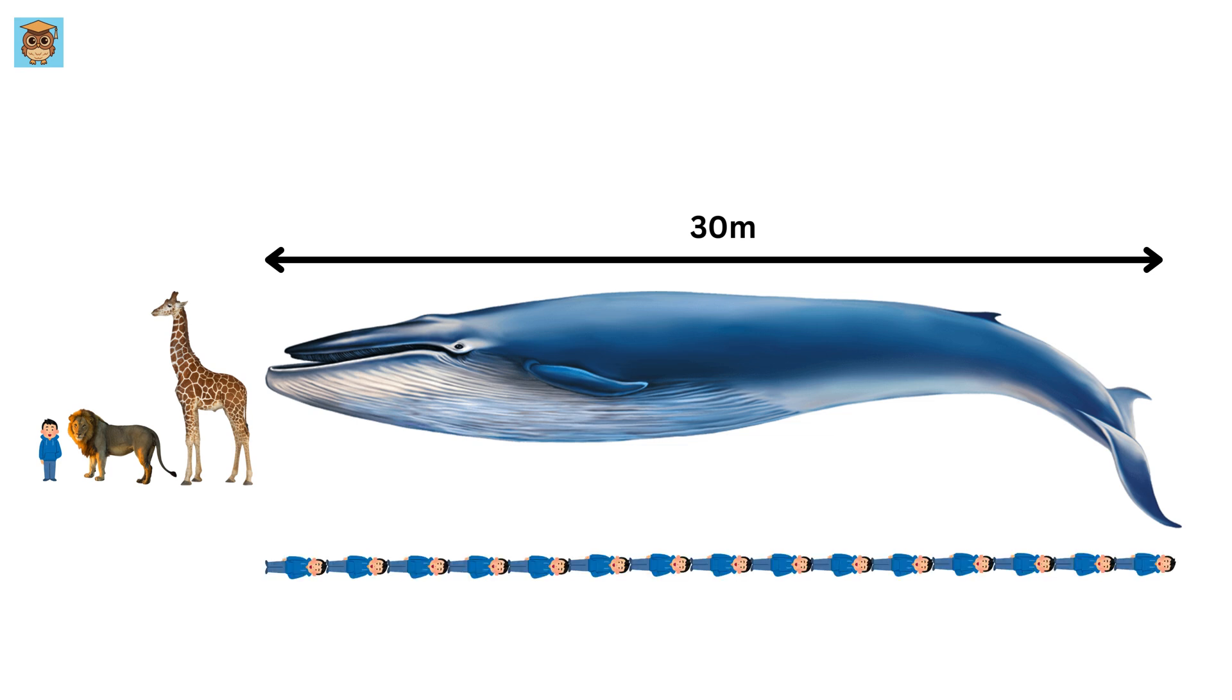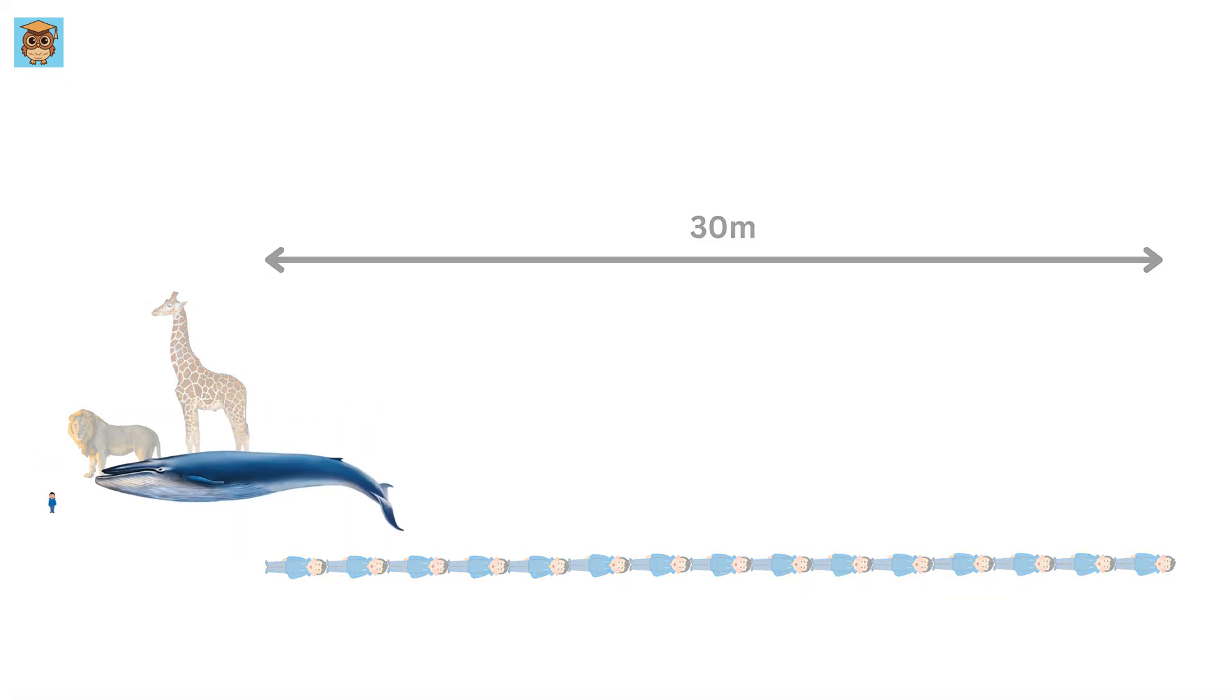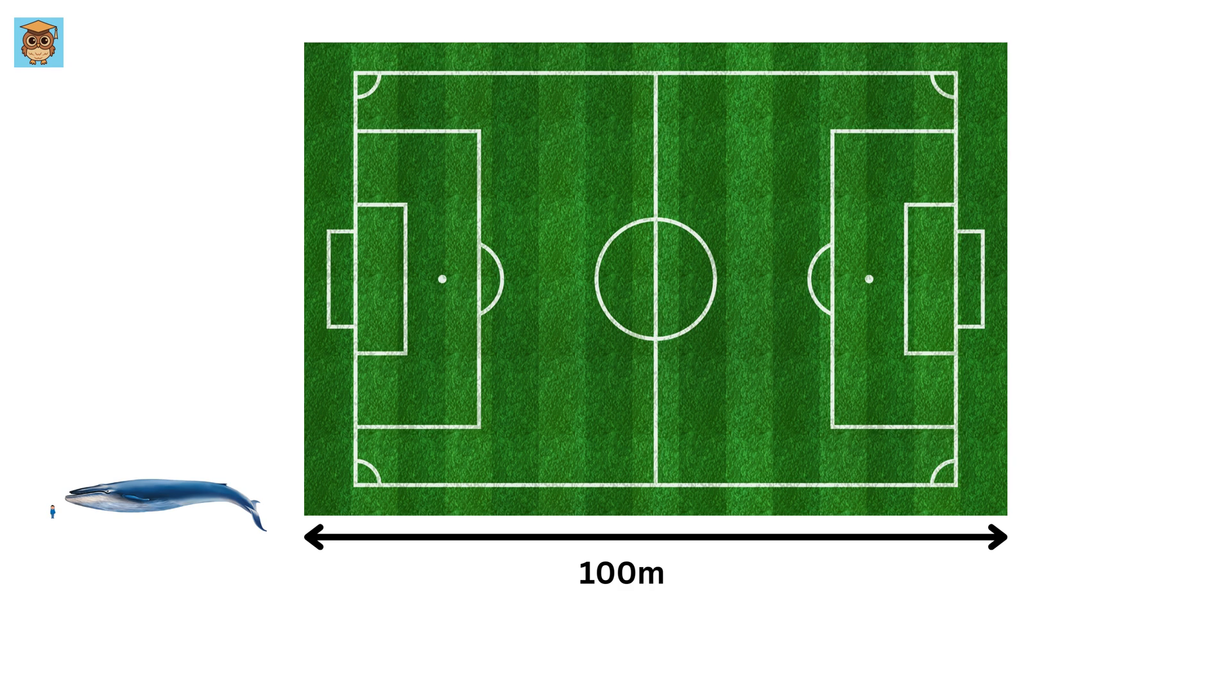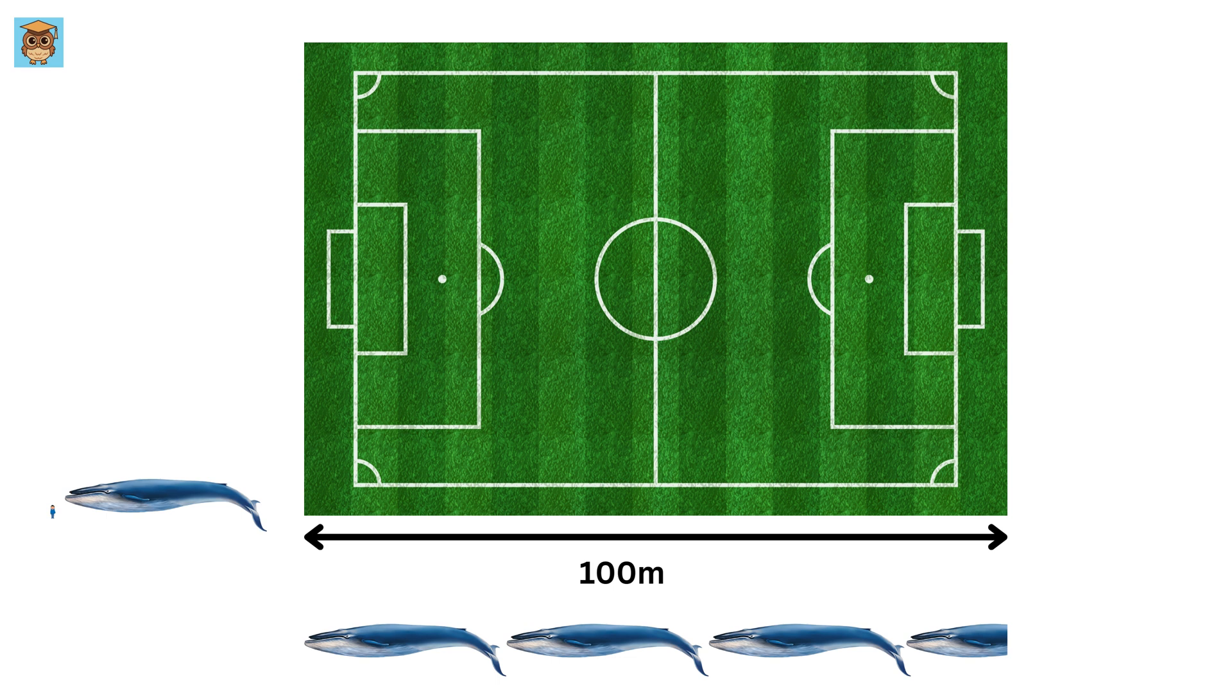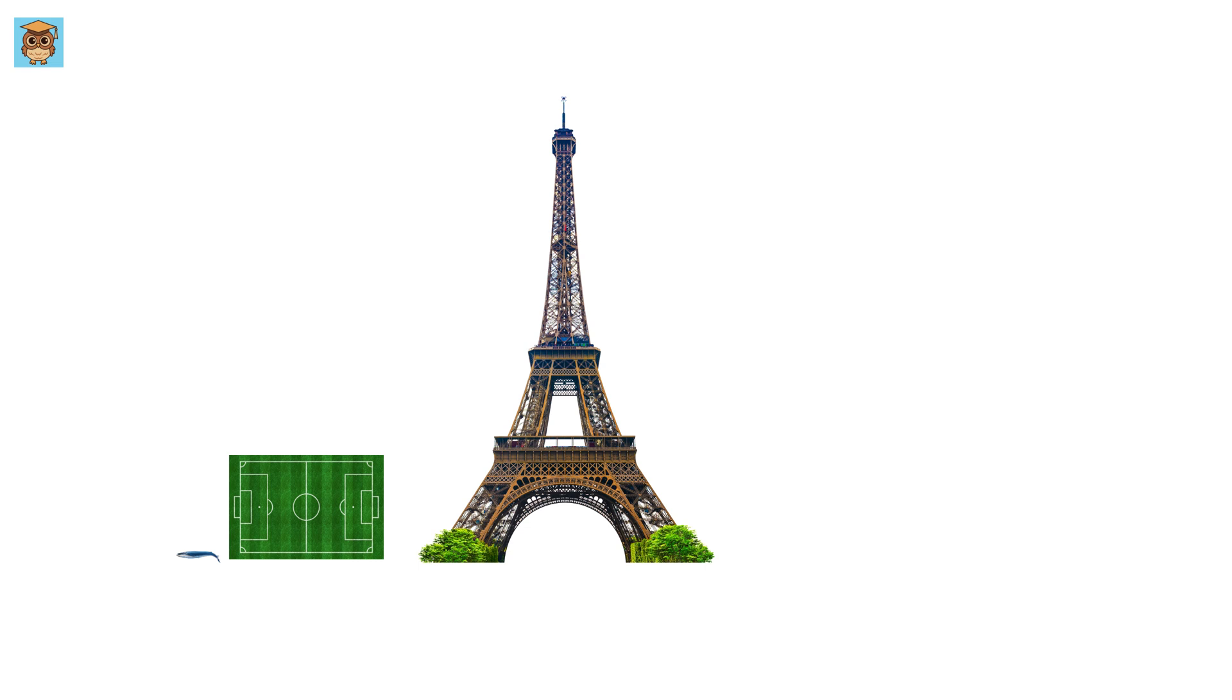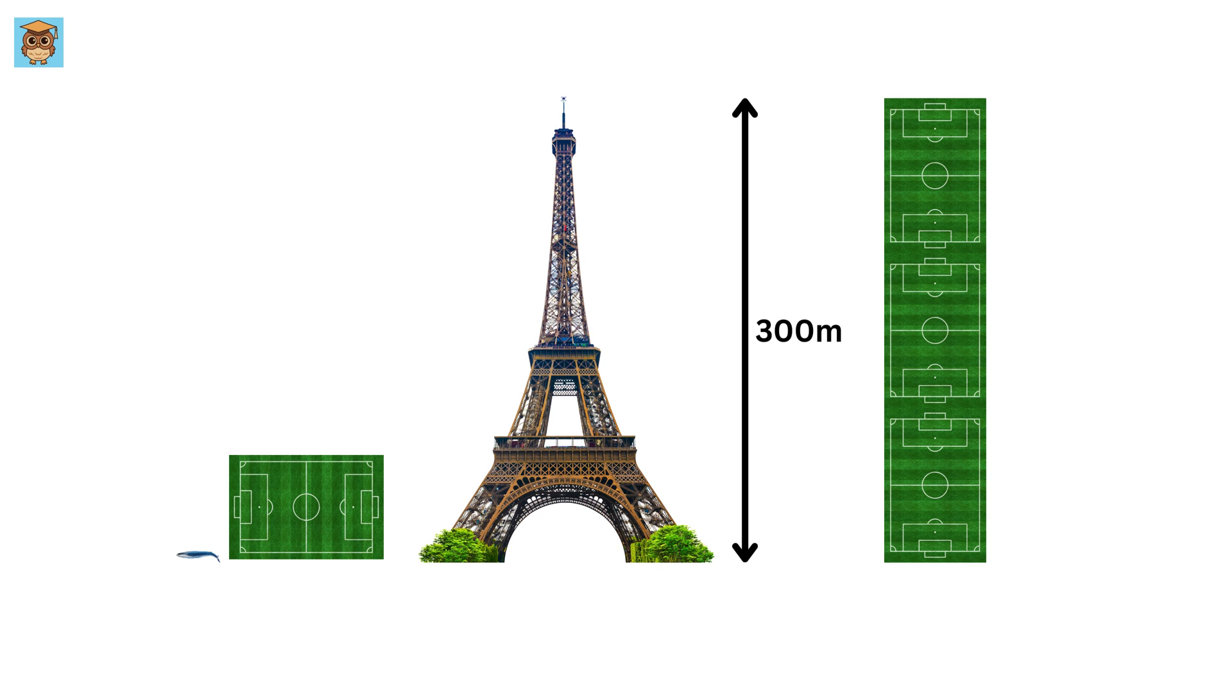That's like stacking 15 of you in a row. But even the whale is nothing compared to what's next. A football field is about 100 meters long. Imagine stacking over three blue whales from end to end just to match that distance. But even that is tiny compared to the Eiffel Tower. It's about 300 meters tall, which is like three football fields stacked together.